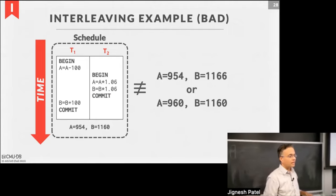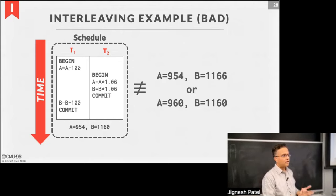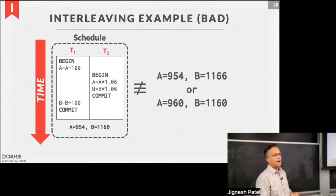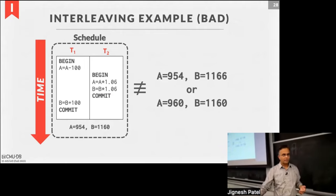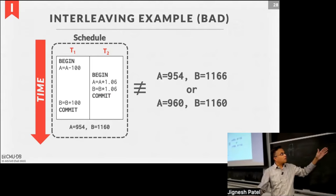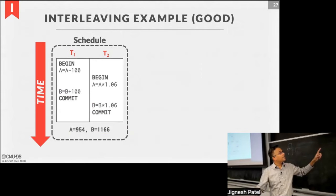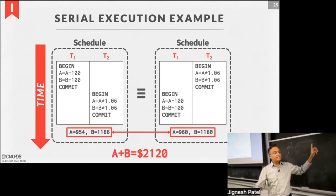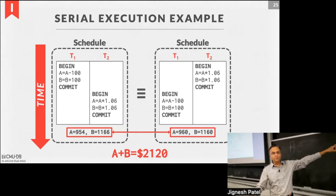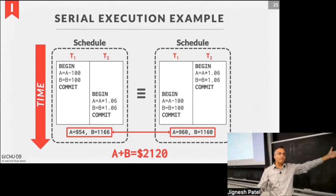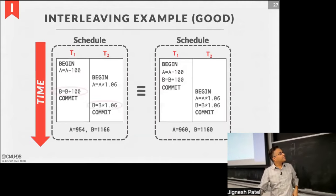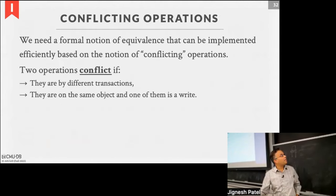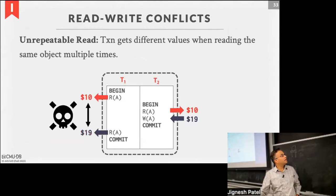Can you talk about why specifically that specific number was okay and how to determine that value? We talked about that last class, but the whole definition of serial schedule is important: if I've got these two transactions T1 and T2, I can have a schedule in which T1 runs followed by T2 and I'll get a certain number, or vice versa.